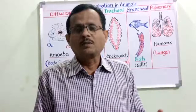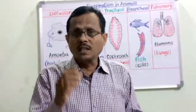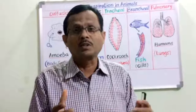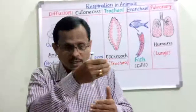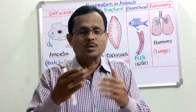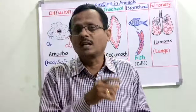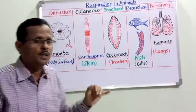In single-celled organisms, the process is diffusion through the body surface, so the respiratory organ is the body surface. Single-celled organisms are bounded by a membrane — the plasma membrane in animal cells. This animal cell membrane is selectively permeable; it allows oxygen to enter into the body whenever there is a deficit of oxygen inside, and excess carbon dioxide which has to be expelled out is sent out through this semi-permeable plasma membrane that surrounds the cell.